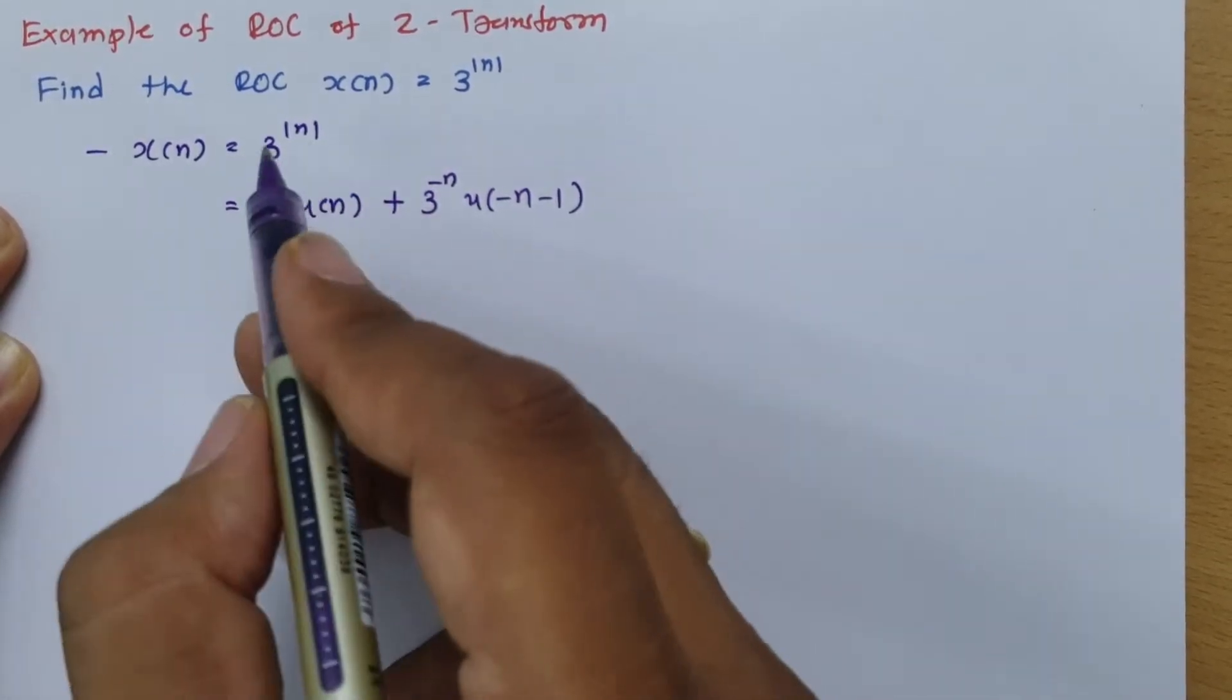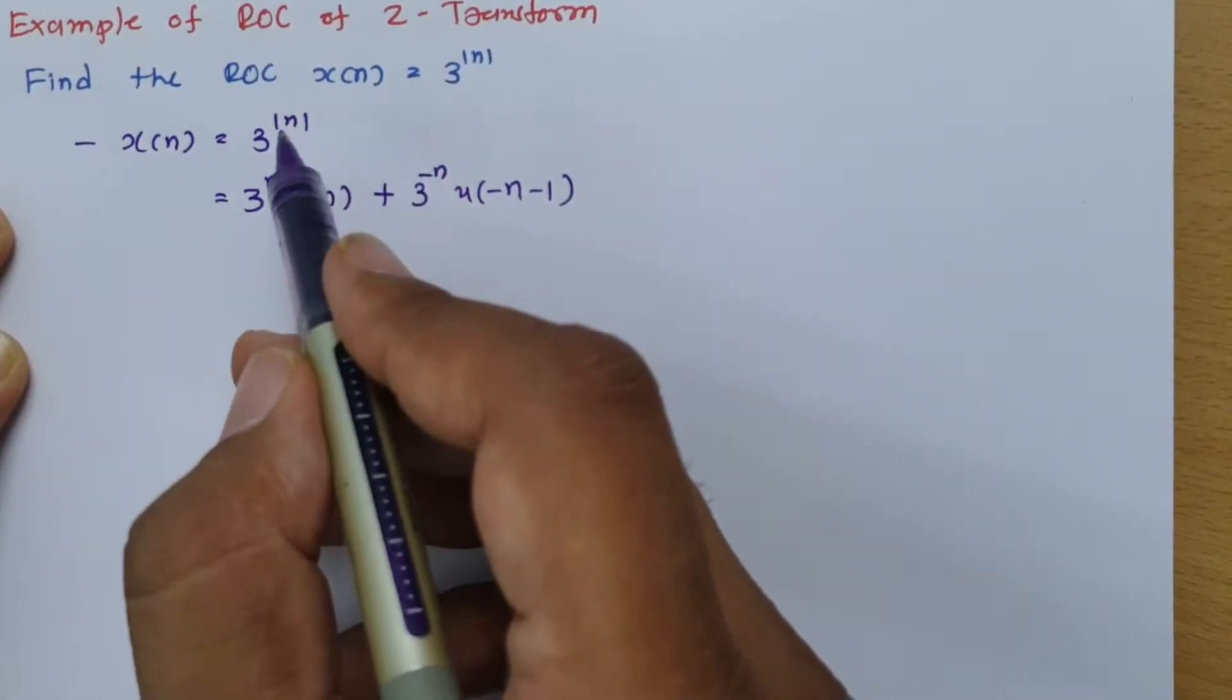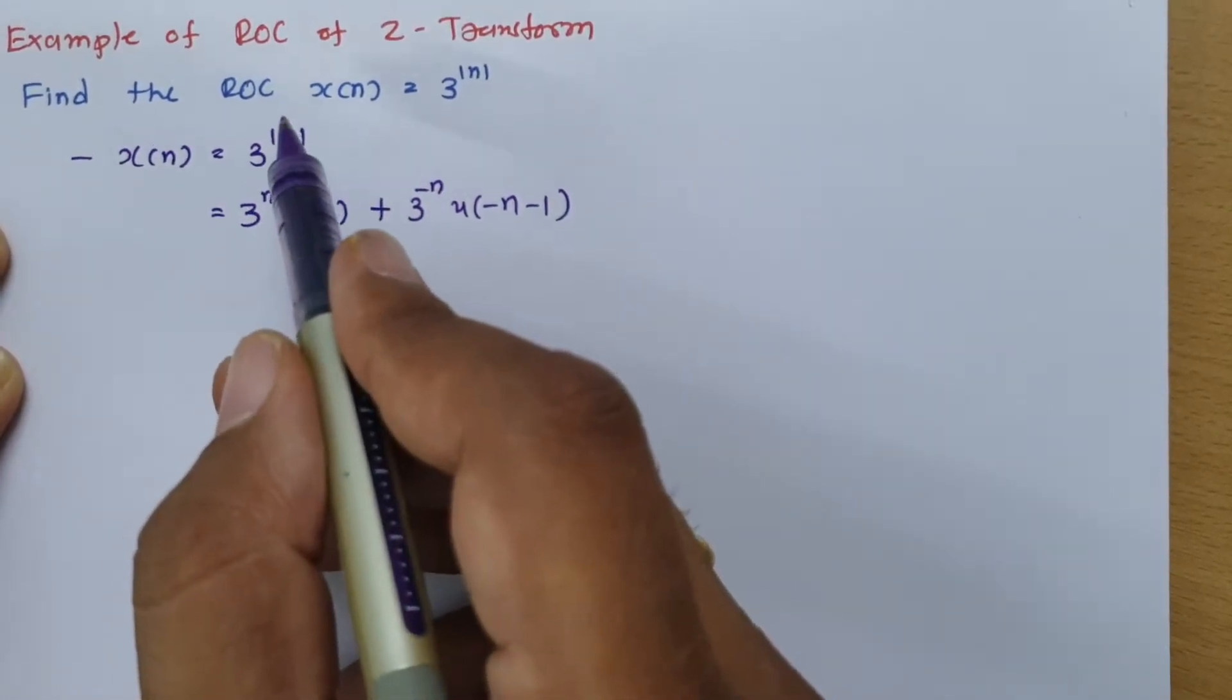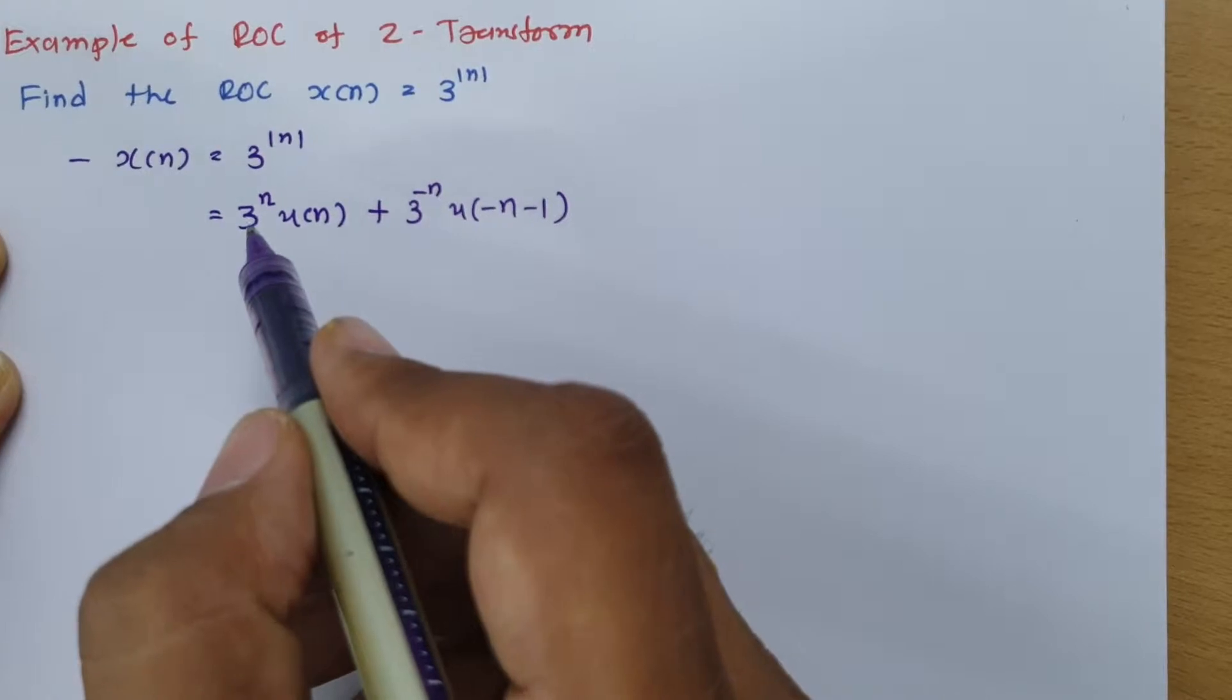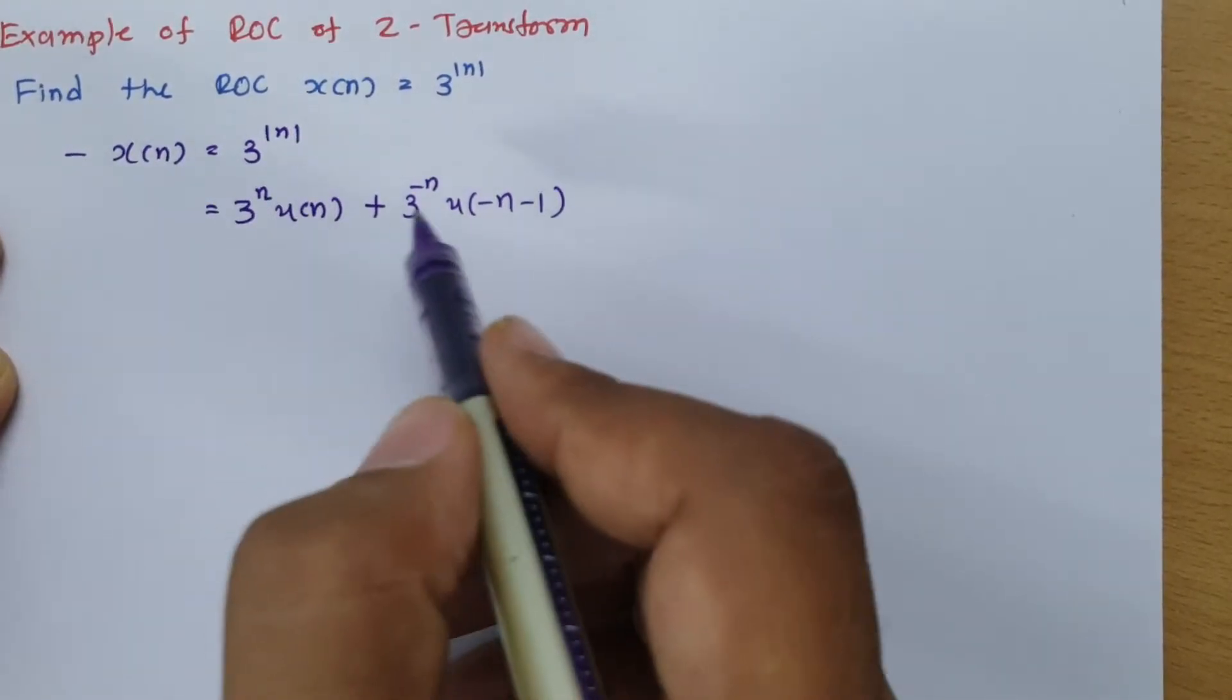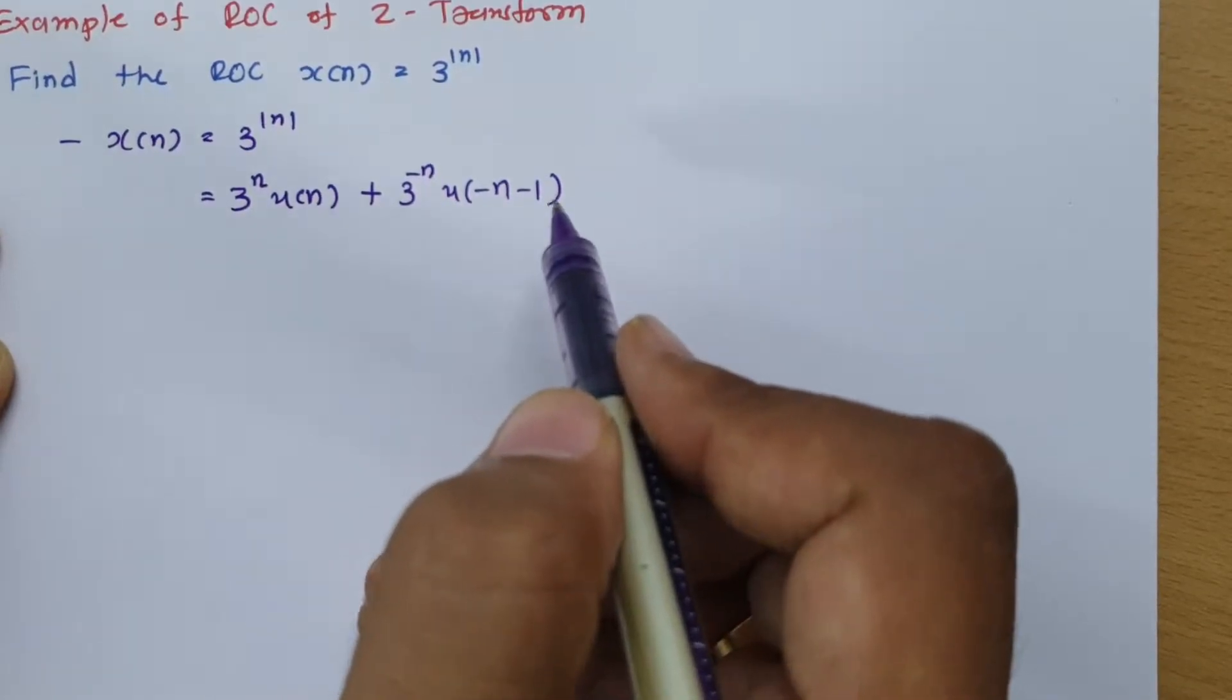This is what I can say. The reason is 3^|n| means it has two directions. One is right sided, which is positive, and one is left sided, which is negative. For right sided it is 3^n u(n), and for left sided it is 3^(-n) u(-n-1).